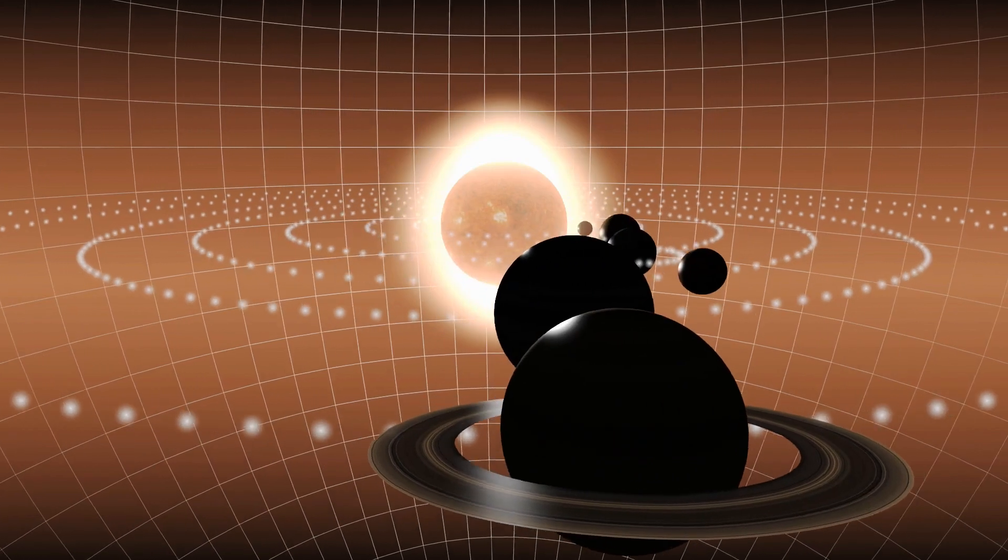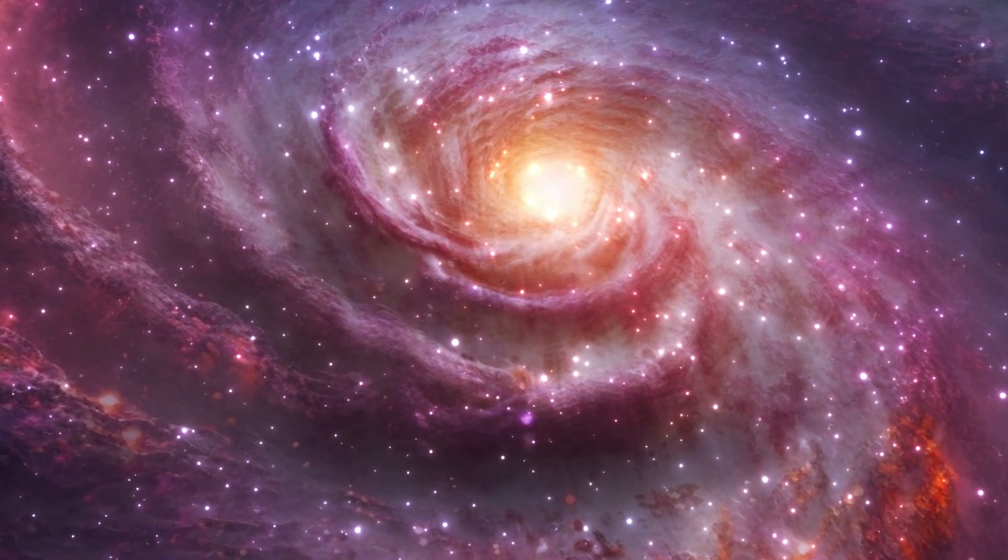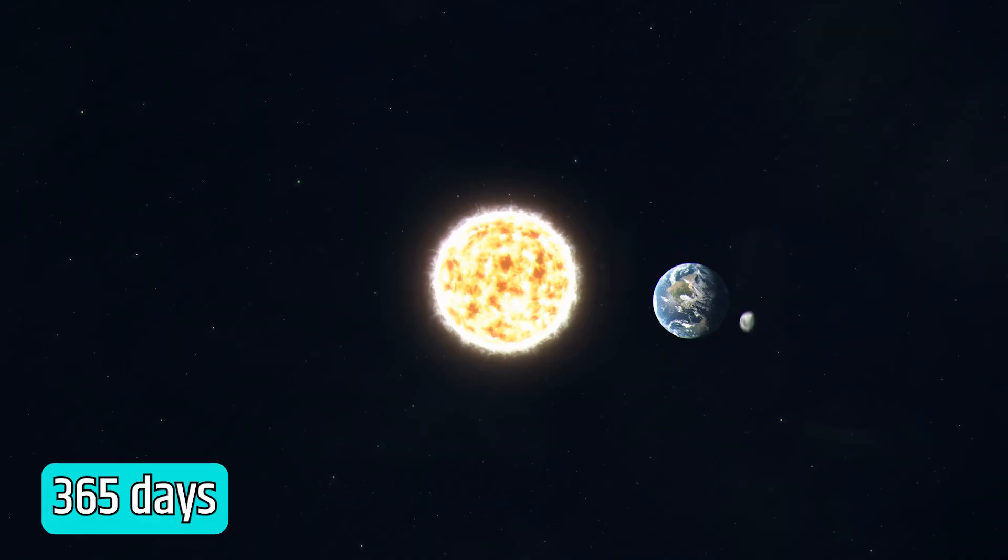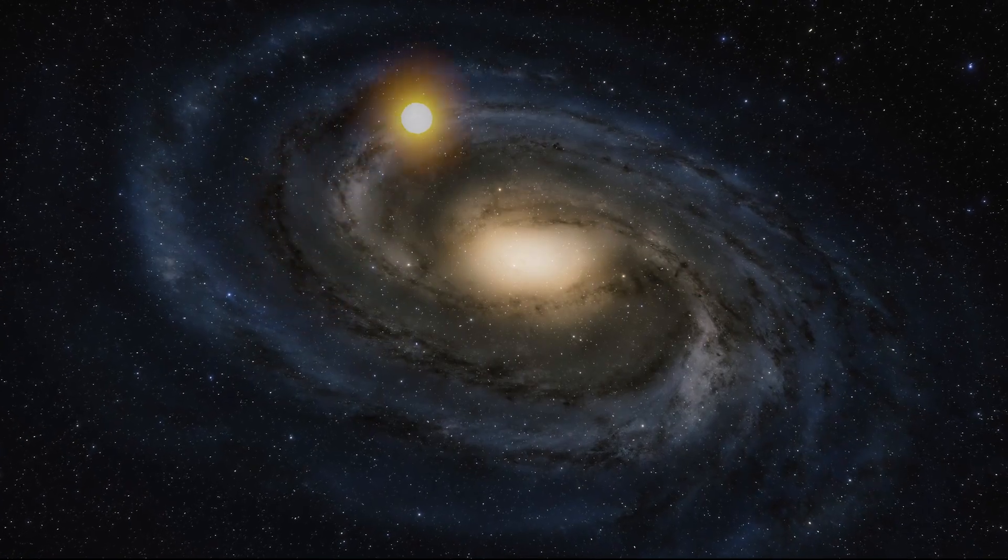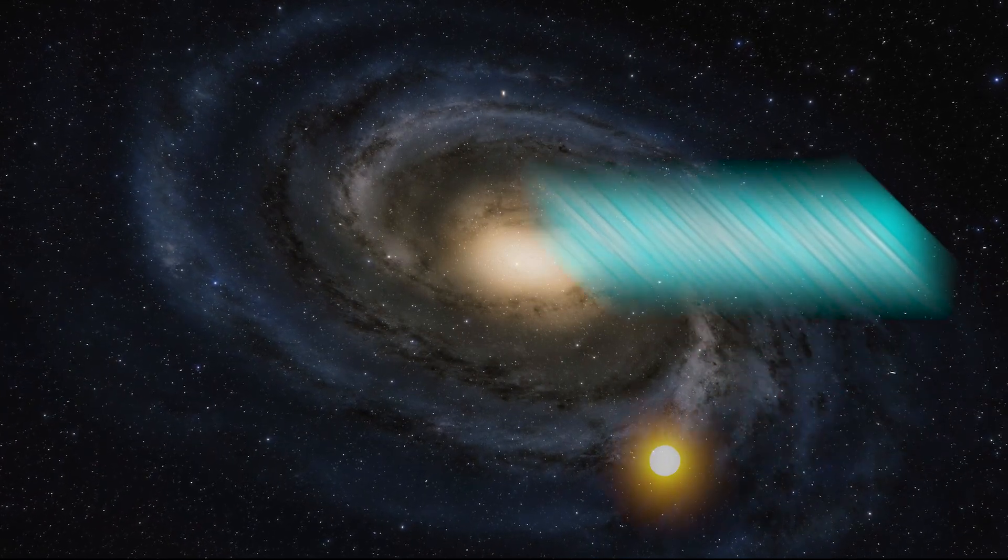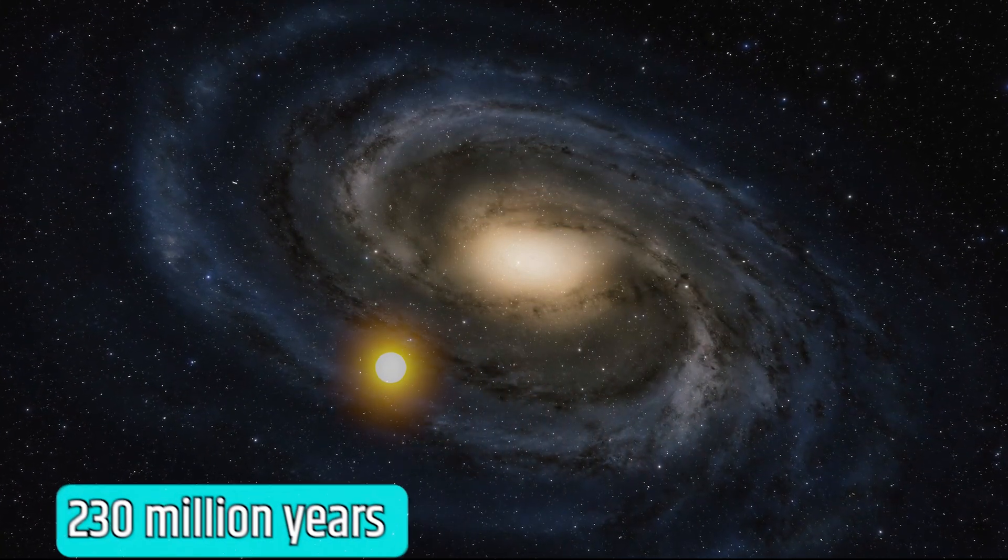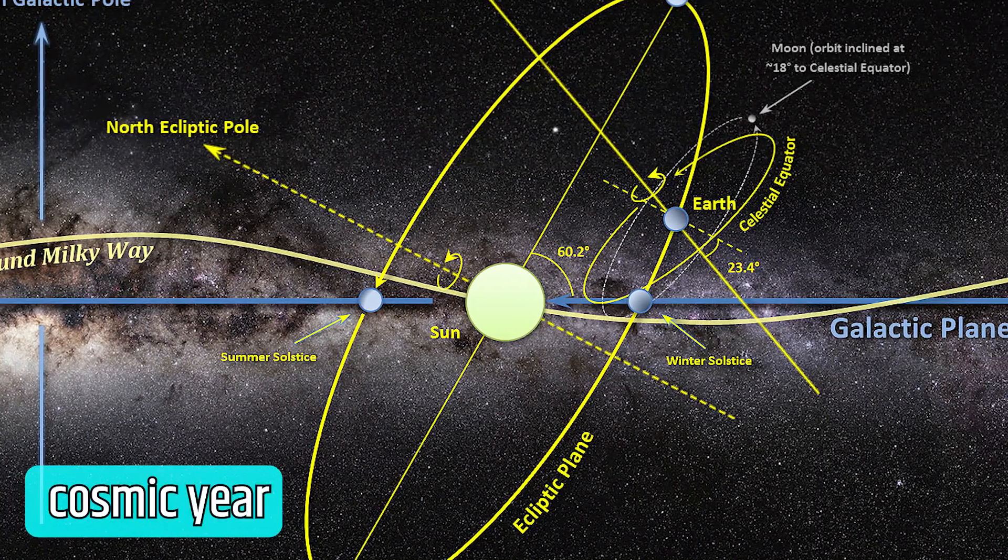However, the sun itself is also moving. It revolves around the center of the galaxy. Just as Earth completes one orbit around the sun in 365 days, which we call a year, the sun, in turn, takes about 230 million years to complete one orbit around the center of the Milky Way. This period is referred to as a cosmic year.